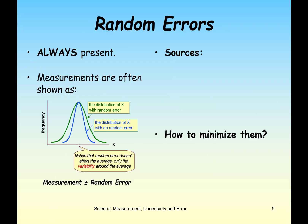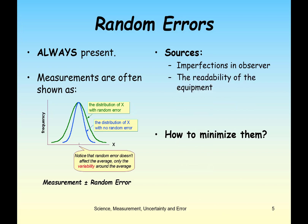Random errors are always going to be present. They are caused by imperfections in the observer — if you take a reading a little off each time, you'll get a slightly different measurement each trial. Random errors can also be caused by the readability of the equipment or external effects on the observed item. For example, if we measure the acceleration due to gravity by timing a falling ball, we have to deal with our own reaction time in starting and stopping the timer, and that causes a random error.